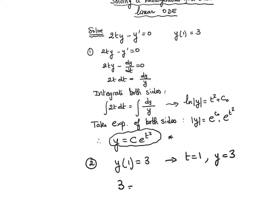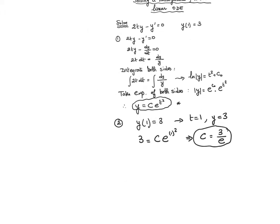So that means that C is 3 over e. And therefore, y is 3 over e times e^(t²).